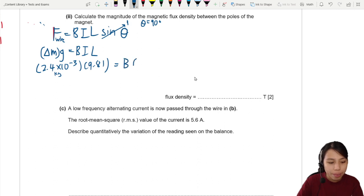Is B, we need to find. Current, they give it to us as 5.6. Length, also they give to us. 6.4 cm. Please remember the cm. Must convert, okay? 10 to the negative 2. With this, we should be able to find our B value.